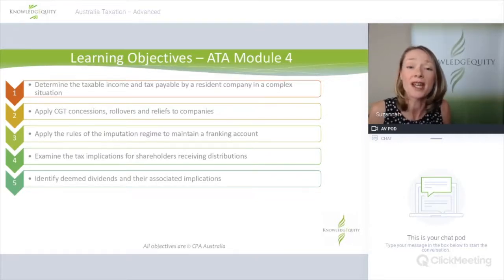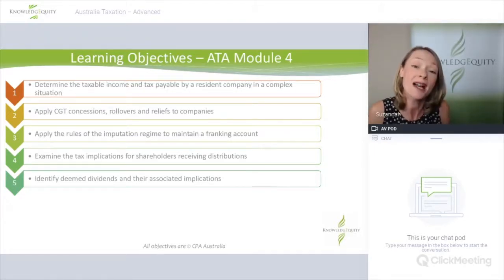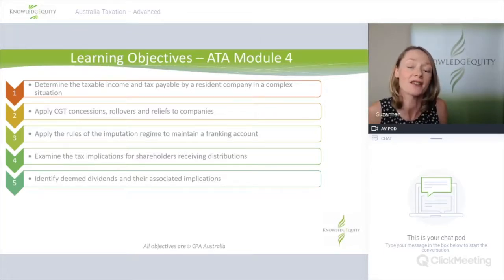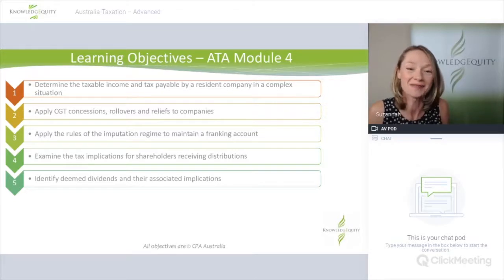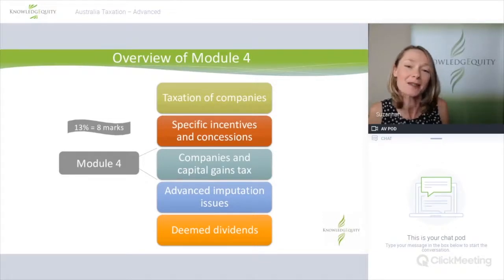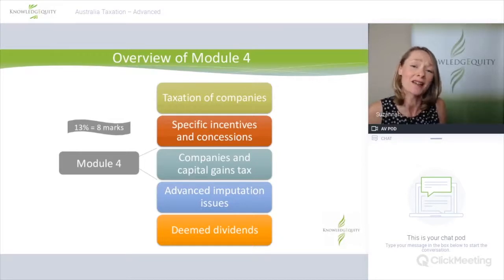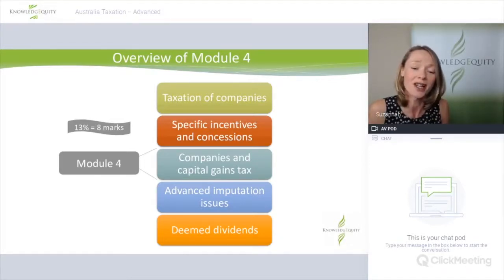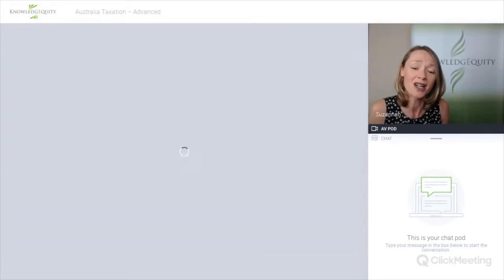Deemed dividends are really important from a private company perspective, particularly when you've got certain loans, payments or debt forgiveness between a private company and their shareholders — they can be treated as deemed dividends under Division 7A of the 1936 Act. There are also other ways deemed dividends can arise, such as on off-market share buyback and on winding up when the liquidator makes certain distributions. This module is 13%, roughly eight marks in your exam.